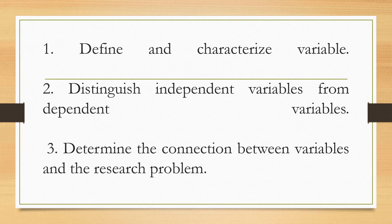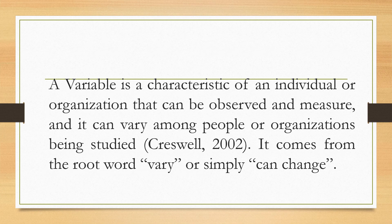That is called a variable. In this lesson, we're going to discuss the most essential learning competencies: Number 1, define and characterize variable. Number 2, distinguish independent variable from dependent variables. And number 3, determine the connection between variables and the research problem.